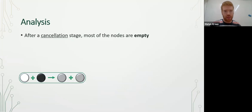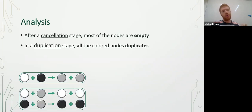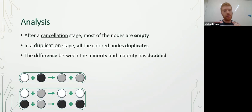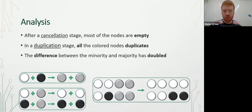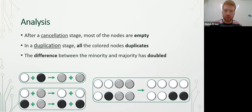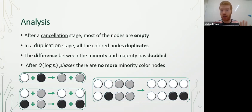After a cancellation stage, one can prove that most of the nodes are empty. Moreover, in a duplication stage, all the colored nodes duplicate. Therefore, the difference between the majority and the minority has doubled. For example, if we had three white nodes and one black node at the beginning of the duplication stage, we will have six white nodes and two black nodes at the end, so the difference doubled from two to four. After log n phases, there will be no more minority color nodes as the difference reaches n.